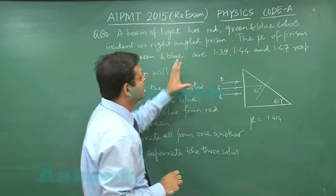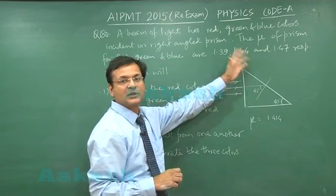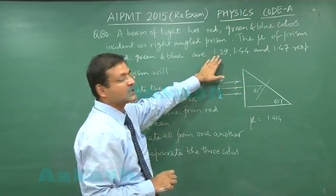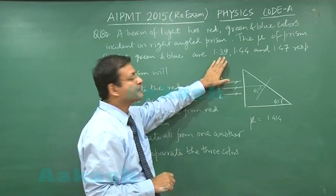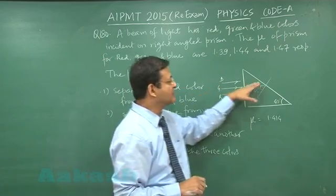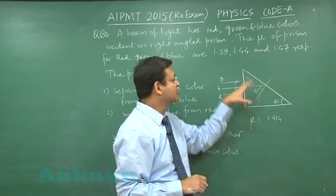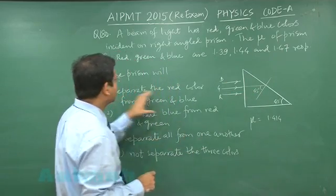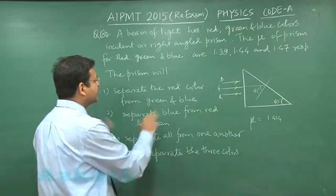red color does not have such a high refractive index. So it will not undergo total internal reflection and will simply pass through, while the other two colors will undergo total internal reflection. This way, red color will be separated from blue and green.